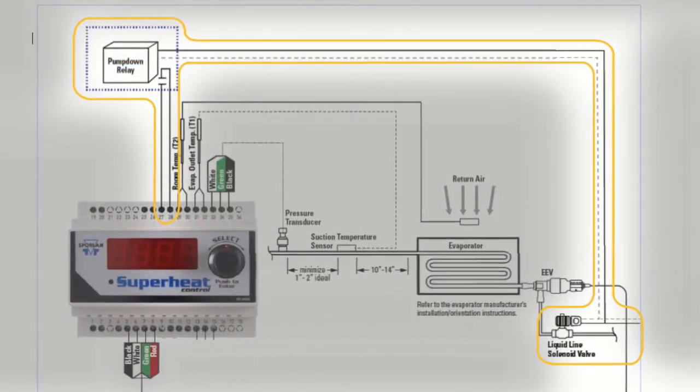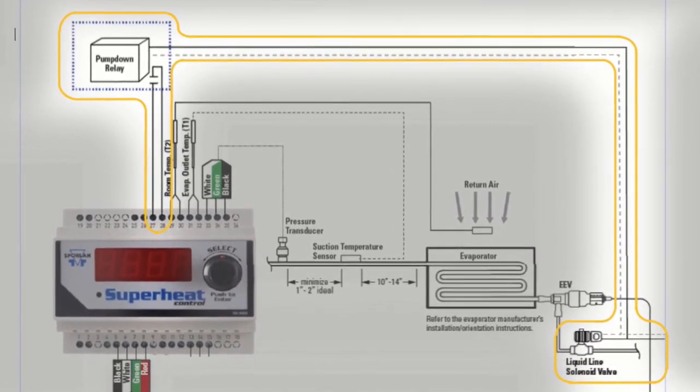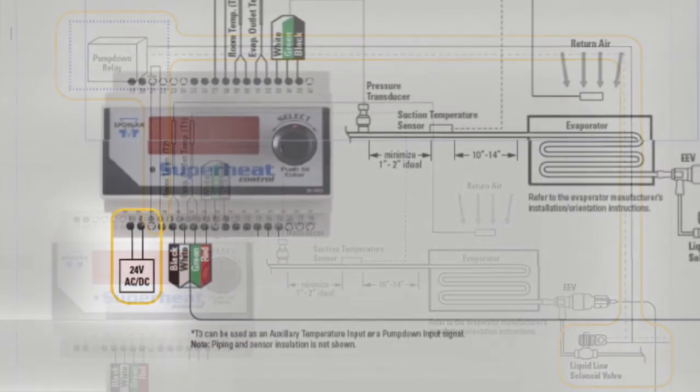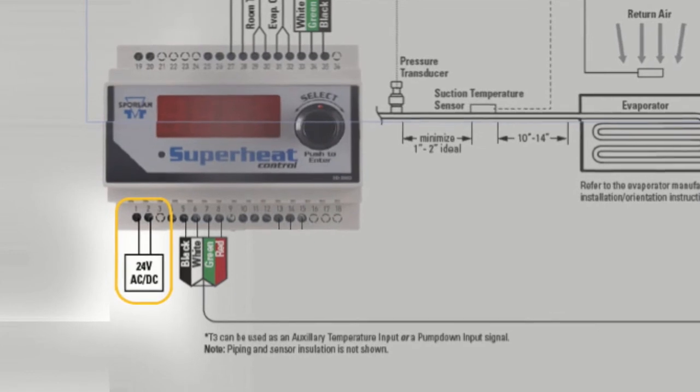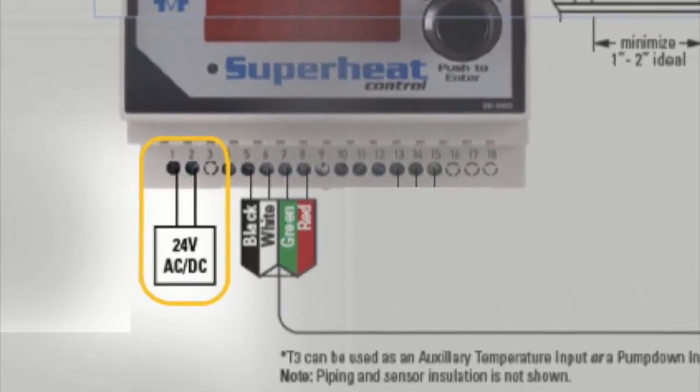Terminals 27 and 28 will be connected to a digital input. A short or closed contact from an external relay will close the valve for pump down. Finally, connect the power wires to terminals 1 and 2. The transformer requirements are 24 volts AC DC at 40 VA.